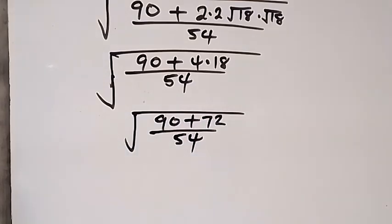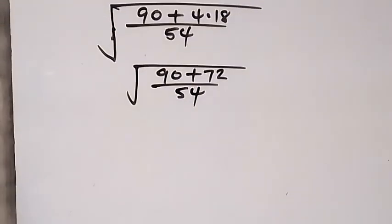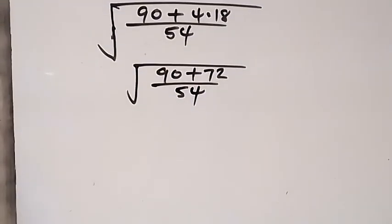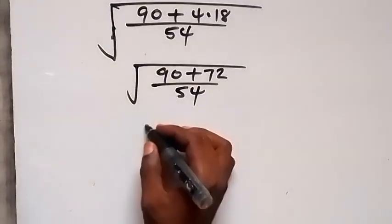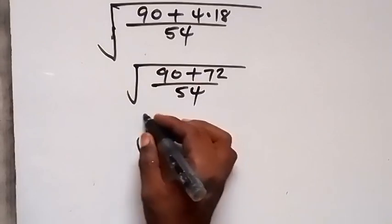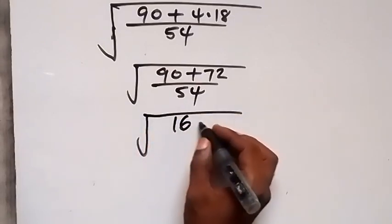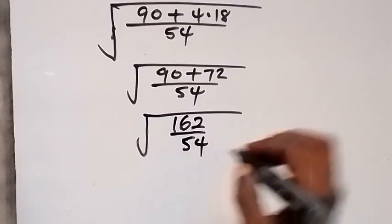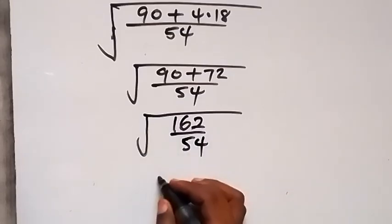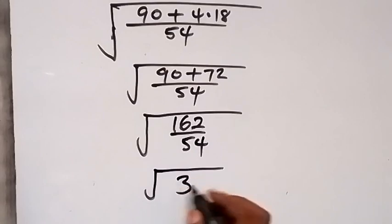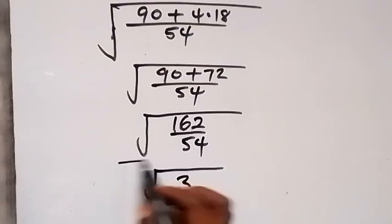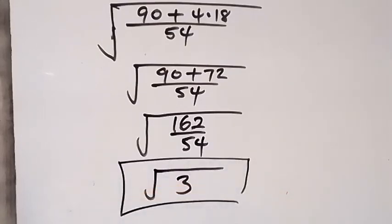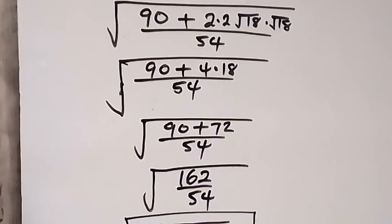90 plus 72 gives us 162. So we have root 162 divided by 54. And 162 divided by 54 gives us 3. So we have root 3. Therefore the simplified form of the expression is root 3.